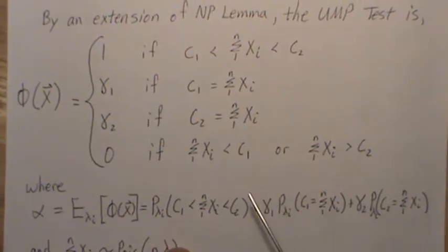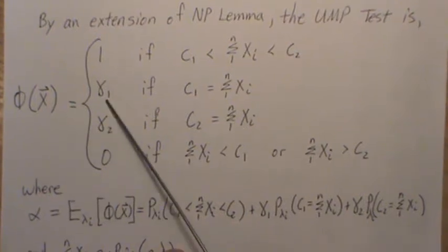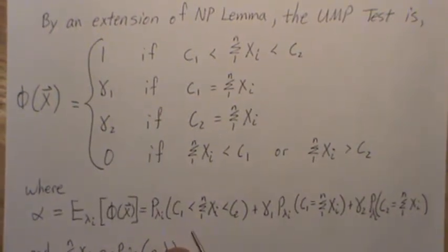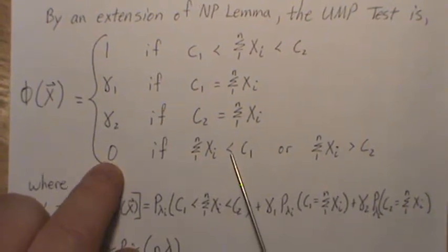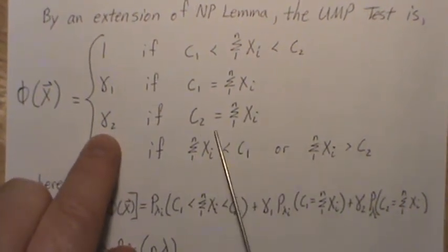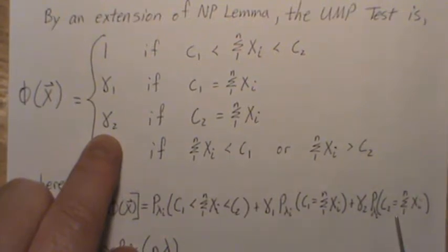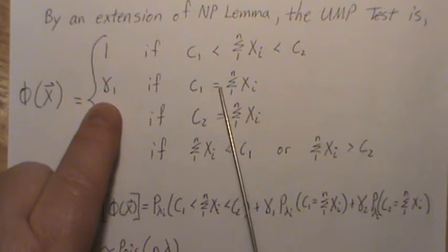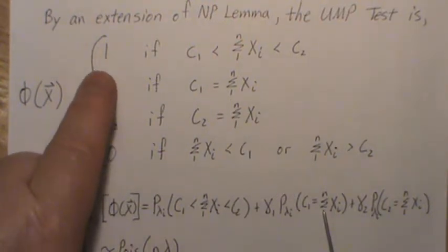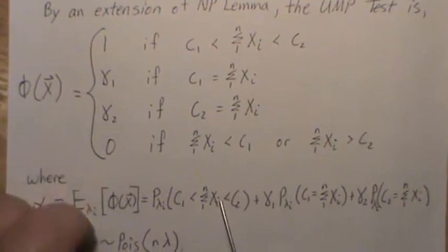And as a reminder to take the expected value of a discrete variable, it's 0 times this probability of happening, so that's 0. Gamma 2 times the probability of it happening. Gamma 1 times the probability of it happening, of observing gamma 1. And 1 times this probability, which is here.